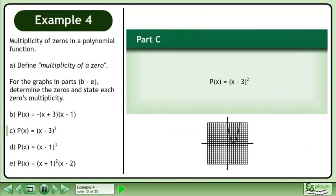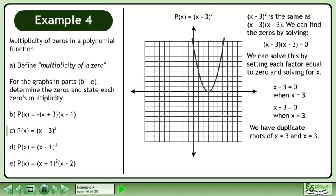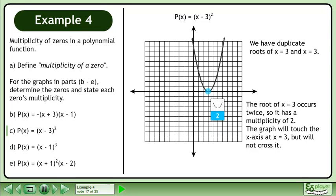In part B, we have the graph of p(x) = (x - 3) squared. (x - 3) squared is the same as (x - 3) times (x - 3). We can find the zeros by solving (x - 3)(x - 3) = 0, setting each factor equal to 0. x - 3 = 0 when x = 3, and x - 3 = 0 when x = 3. We have duplicate roots of x = 3. The root x = 3 occurs twice, so it has a multiplicity of 2. The graph will touch the x-axis at x = 3 but will not cross it.